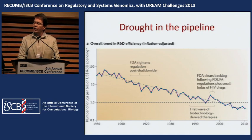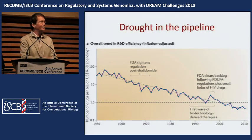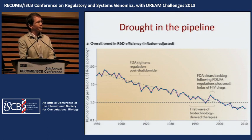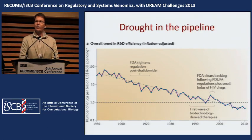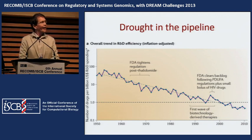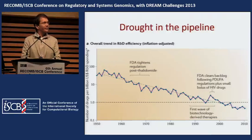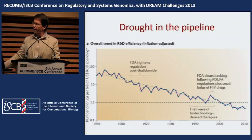Finally, to end this part of the talk: this is a graph showing how many drug molecules a billion dollars buys as a function of time. Some time ago you could get a lot of drugs for a billion dollars, but now we're below one drug per billion dollars — it costs more than a billion dollars to develop a drug. New methods are needed to flatten this curve, and maybe the sort of studies I showed you will assist with that.